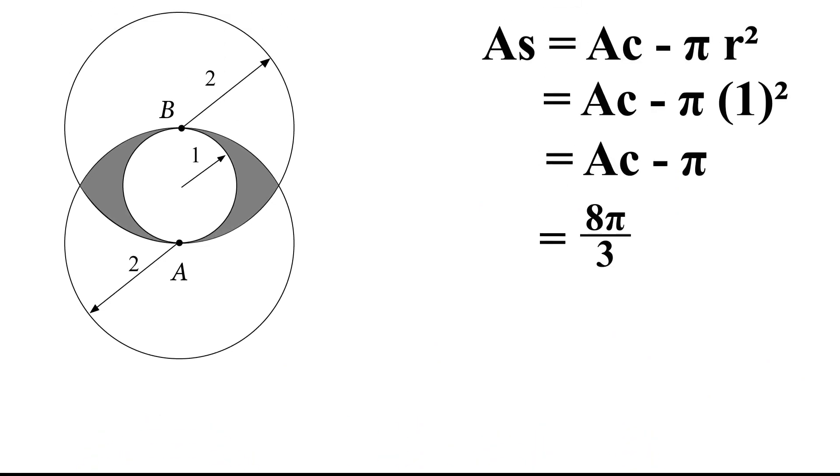8π/3 - 2√3, and then don't forget this minus π. So we get a common denominator and that will be 8π - 3π which is 5π over 3 minus 2√3.